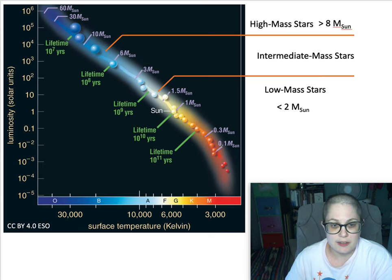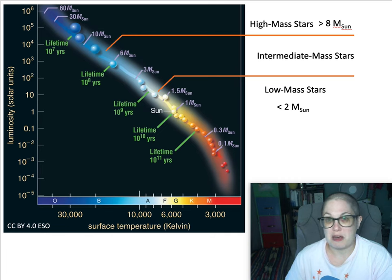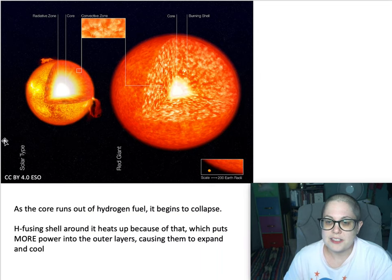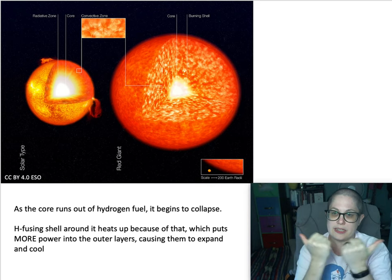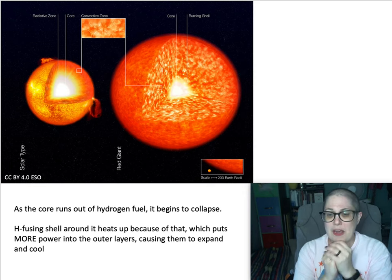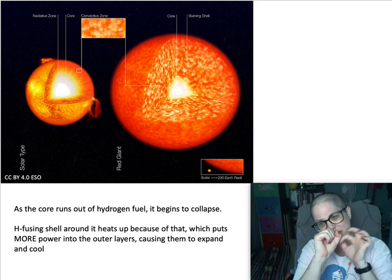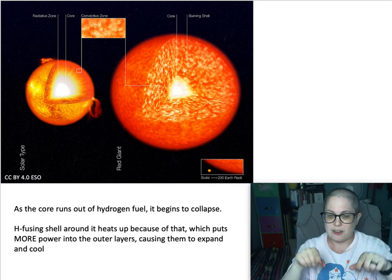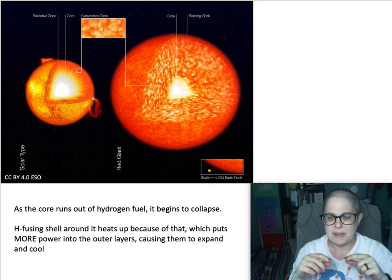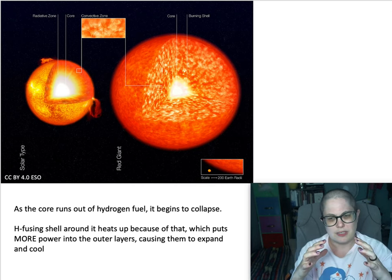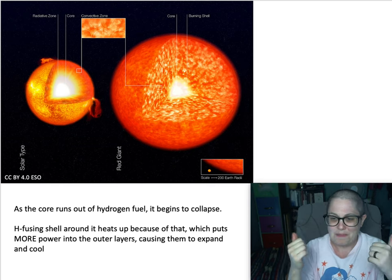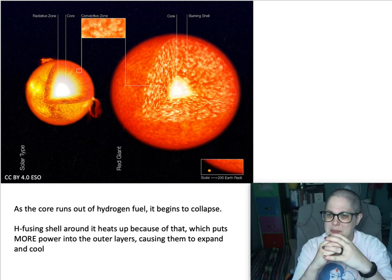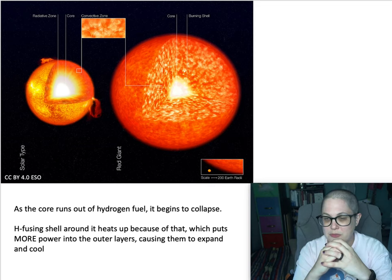Let's talk specifically about the sun to see what happens when it runs out of hydrogen in its core — that'll happen in about 5 billion years. On the left, this is a star like the sun with hydrogen fusing in the core, giving it outward pressure. When that runs out, it actually just runs out in the center in the core. There's a shell of hydrogen fusion around the core that remains.